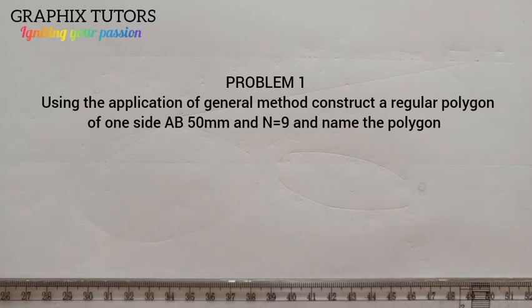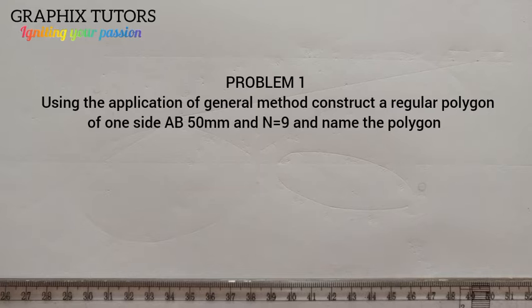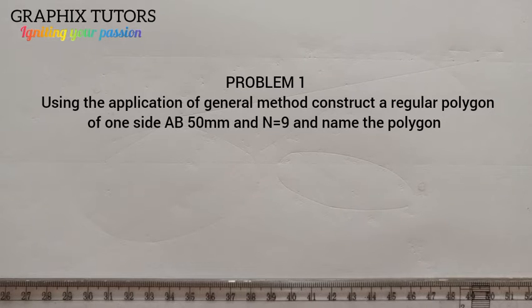A regular polygon is a polygon that has all its sides equal. We said the number of sides n is equal to nine. The kind of polygon that has nine sides is called a nonagon. So we want to construct a nonagon using the general method, and one of its sides is 50 millimeters.